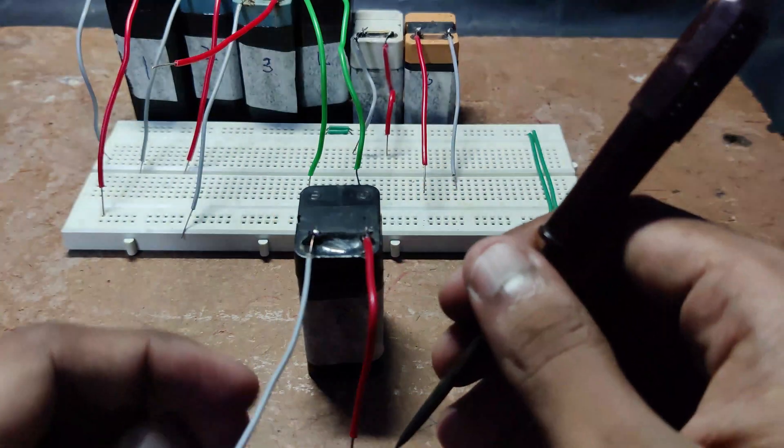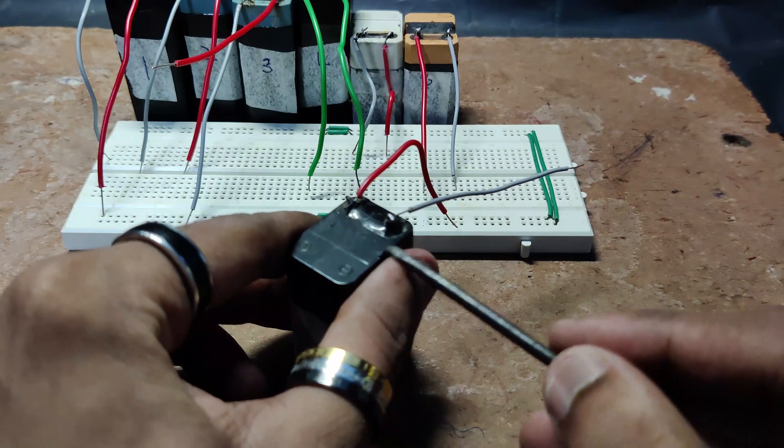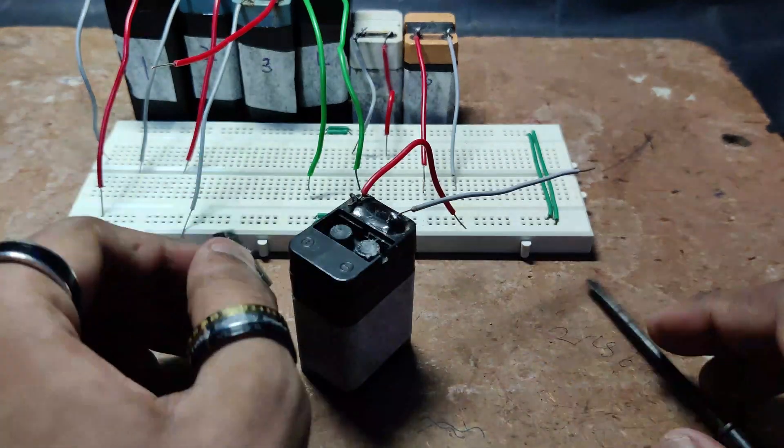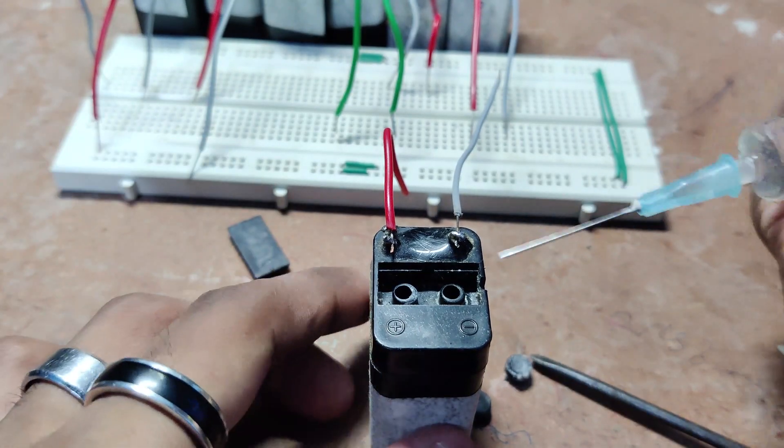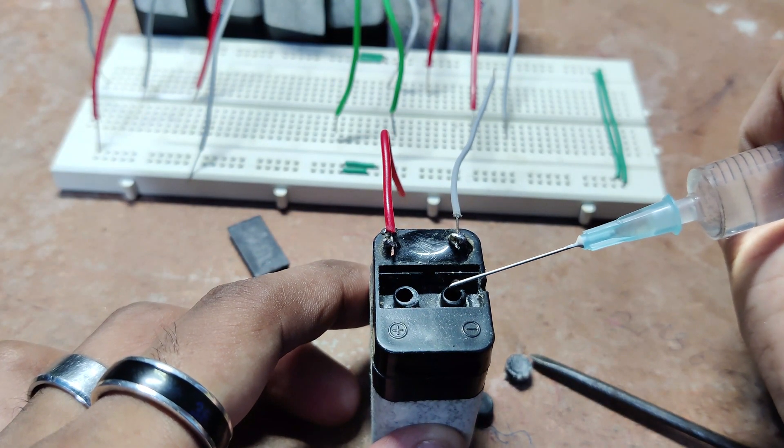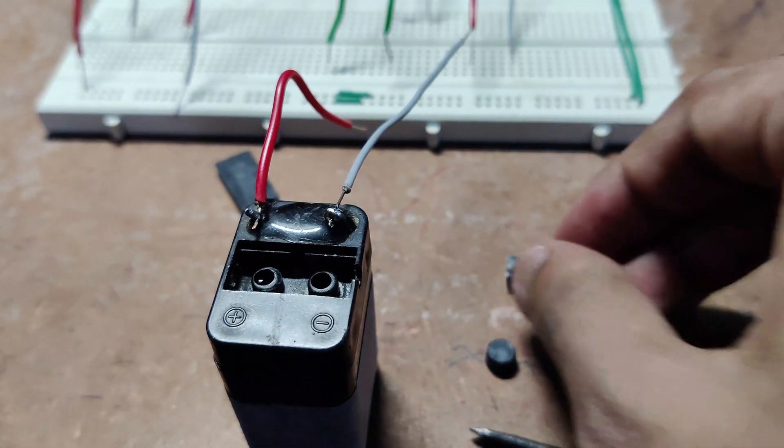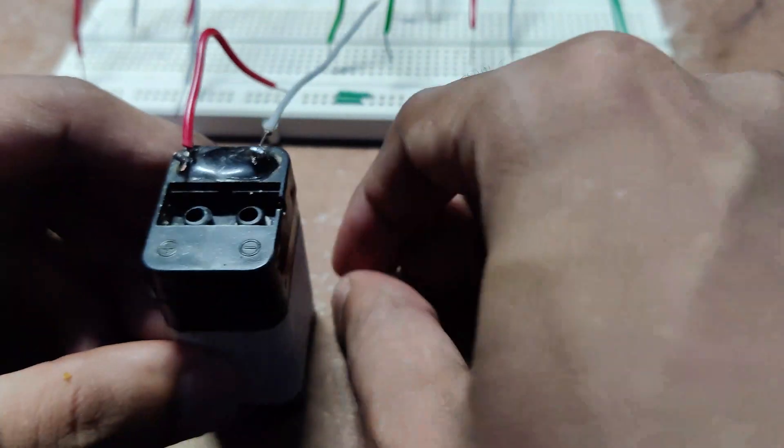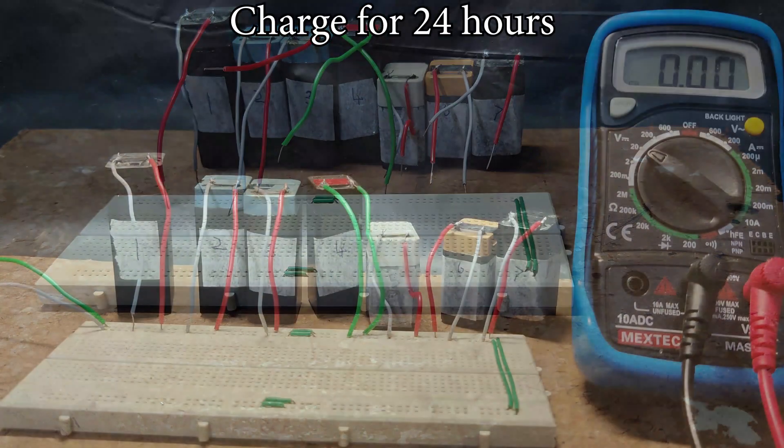Let us fill all the batteries with 6 drops of distilled water in each, which makes 12 drops in a battery. If the water is not seeping down, just give it a shake. Similarly do it to all the batteries. Charge all the batteries for 24 hours.